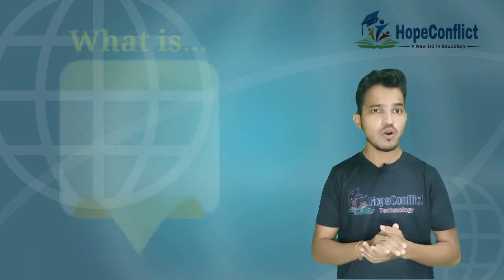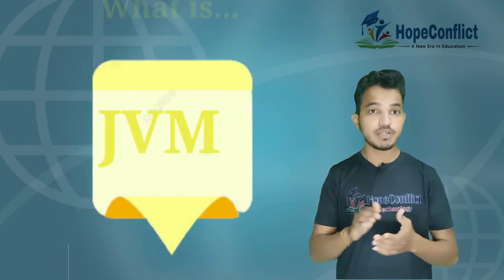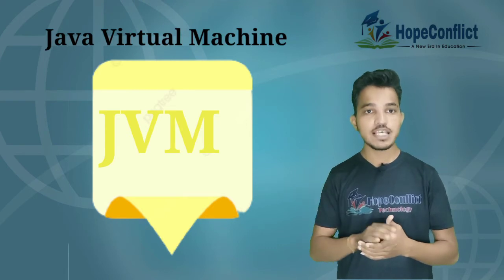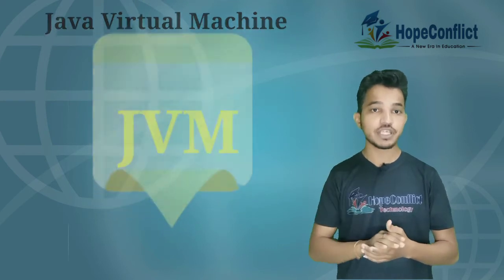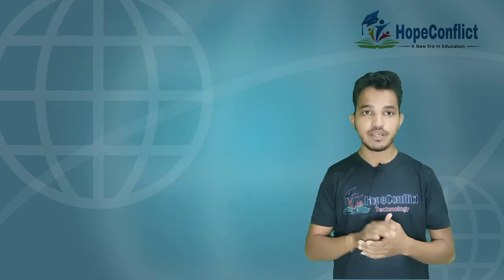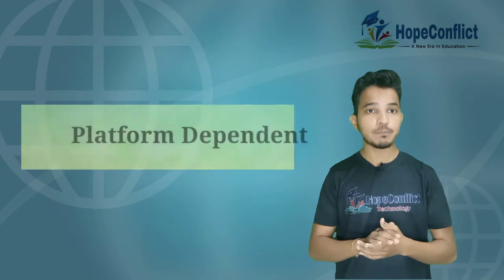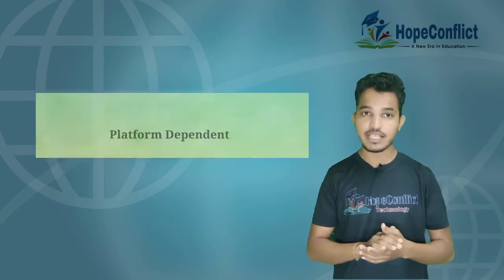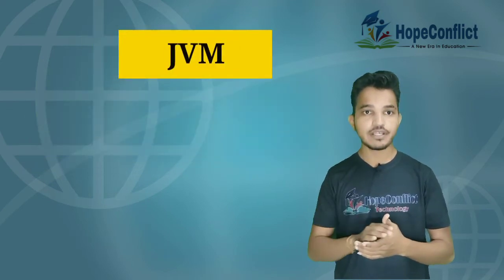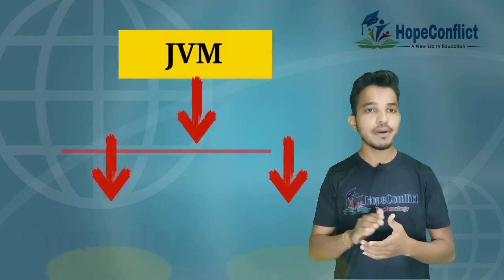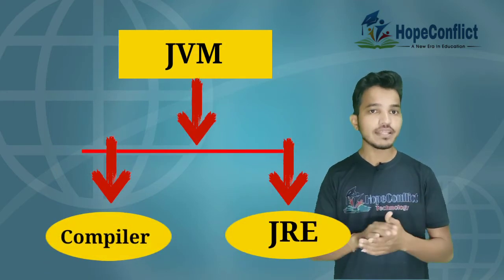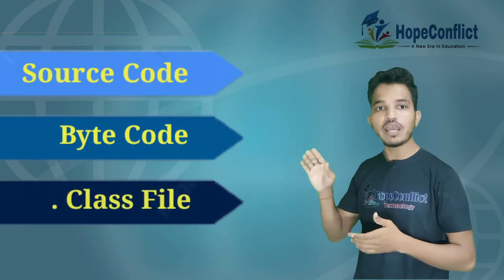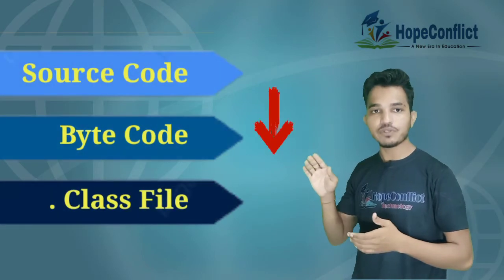Now, what is meant by JVM? JVM stands for Java Virtual Machine and provides a specification in which bytecode can be executed. It is also platform dependent because it is available for many hardware and software platforms. It internally contains a compiler and JRE. The compiler is used to convert source code into bytecode and bytecode into a .class file.